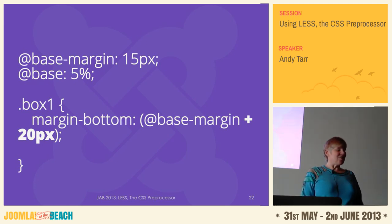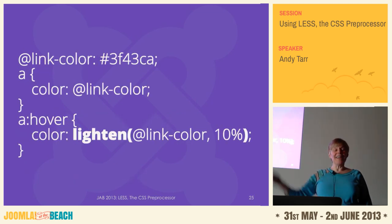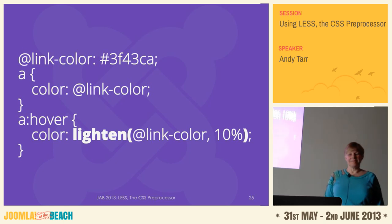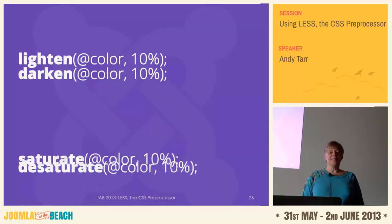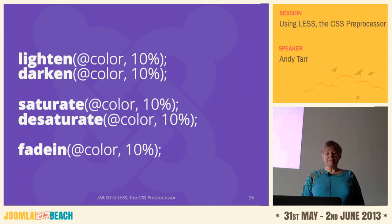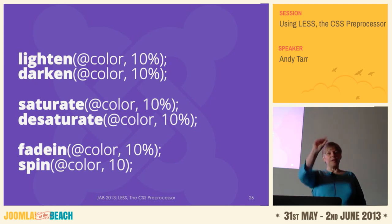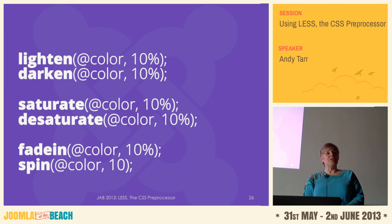In fact, there are built-in functions that do some of these things for you already. You can lighten the link color by 10%. You've got lighten, darken, saturate, desaturate, fade in, fade out - those make it more or less transparent. And then spin actually takes the color wheel and tweaks it, so if you want some complementary colors you can use it for that.